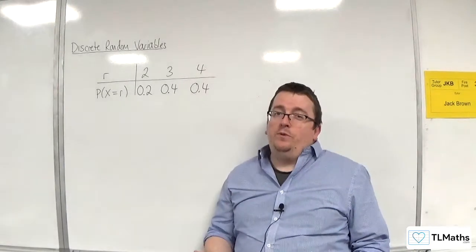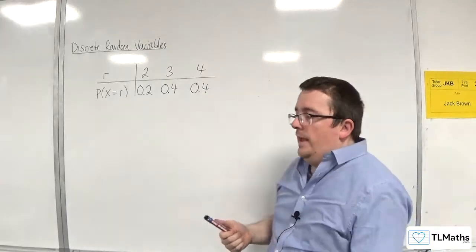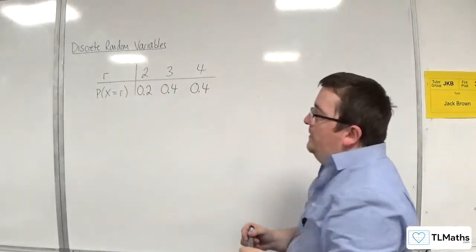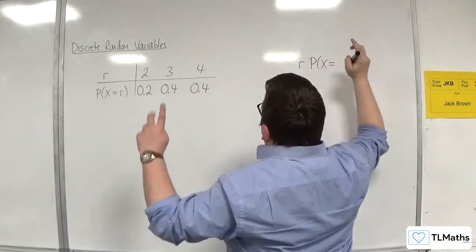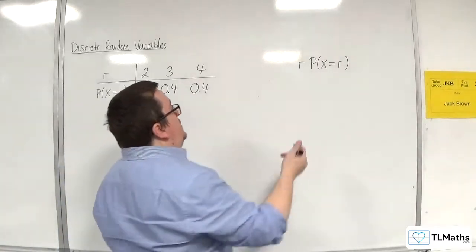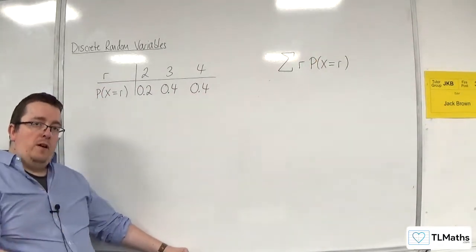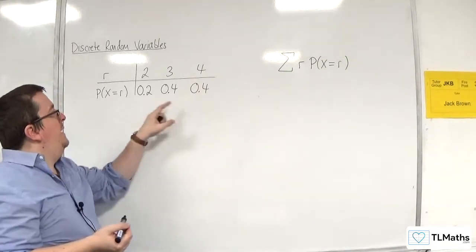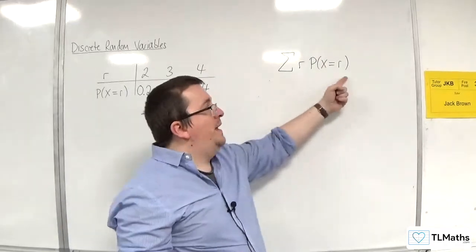If you think about how you would do that — imagine that these are frequencies — what you would do is multiply these values of r by their respective probabilities, giving you r times each of their frequencies. Once you've added all of those together, you divide by how many there are. Adding up the total frequencies here means adding up all the probabilities, which of course equals 1. So you would just divide by 1.